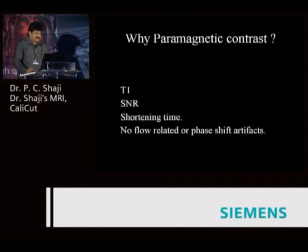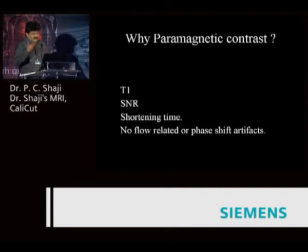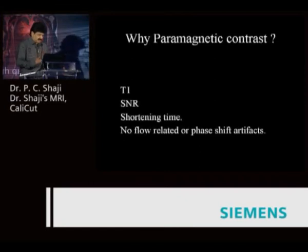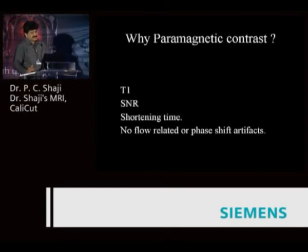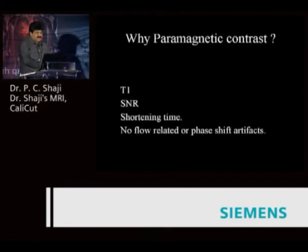In contrast enhanced angiography you use paramagnetic contrast agents. Why paramagnetic contrast agents? In contrast enhanced vascular imaging, contrast depends on T1 contrast. A paramagnetic contrast agent reduces T1 so that you get signal, and surrounding tissue signals are suppressed, giving better SNR. Our aim is to reduce the T1 of blood by injecting paramagnetic contrast agents. There is no flow-related effect because the T1 effect is not dependent on flow. The image resolution obtained equals what you get in conventional imaging.